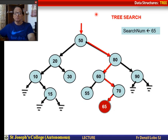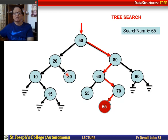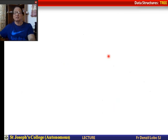This is how I conduct my search, starting with the root node. Suppose instead of 65 it was 40. Then I would ask: is 40 greater than 50? No. I would come here, then ask: is 40 greater than 20? No. I would go in that direction and ask: is 40 greater than 30? No. I would come to current null and the search is over, but I have not found the number desired.